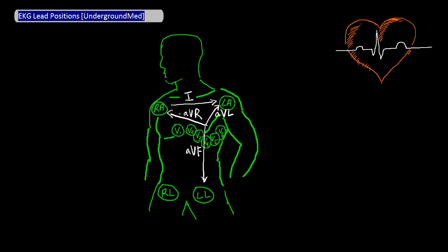Lead 2 represents the voltage that goes from the right arm to the left foot, something that we already have from the RA and LL leads. And lead 3 represents the voltage that goes from the left arm to the left foot, something that we already have from the LA and LL leads.